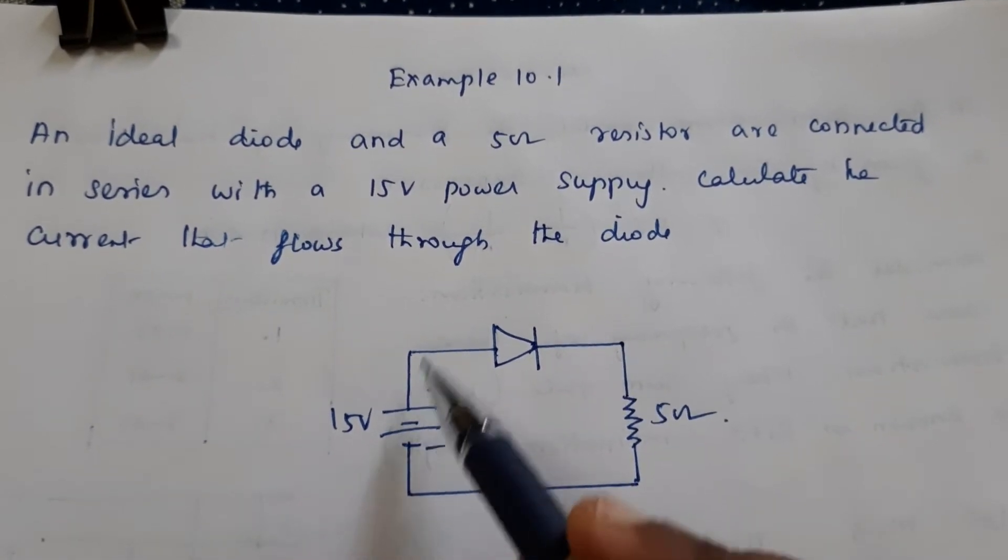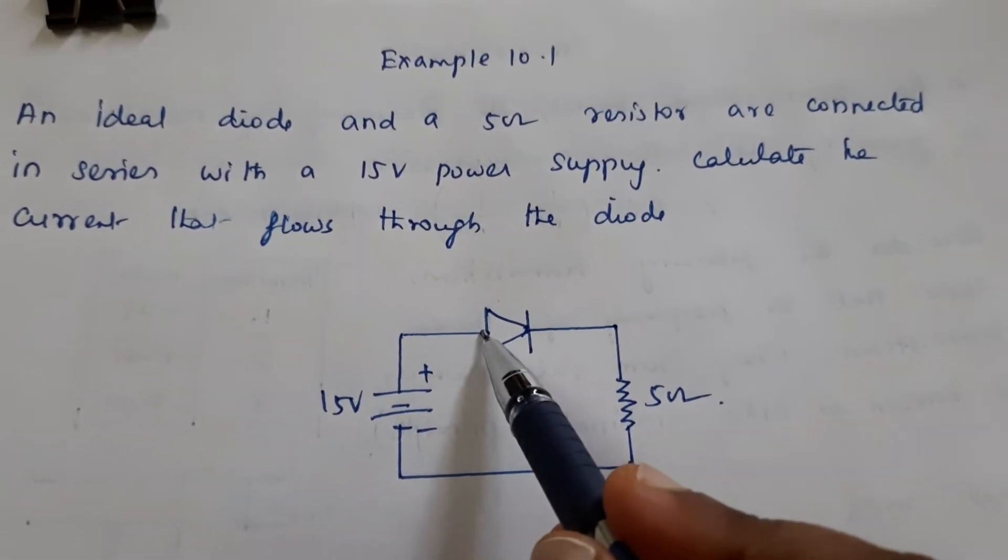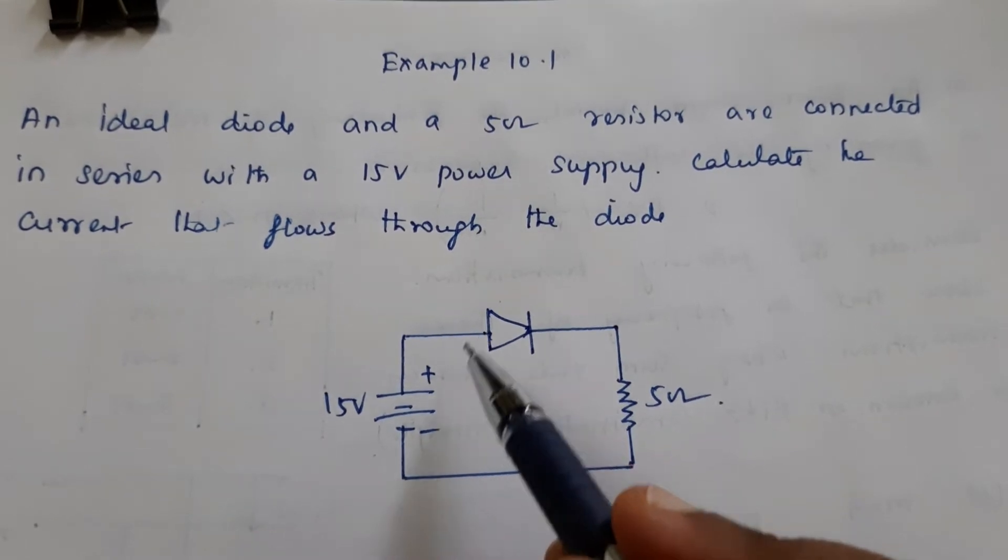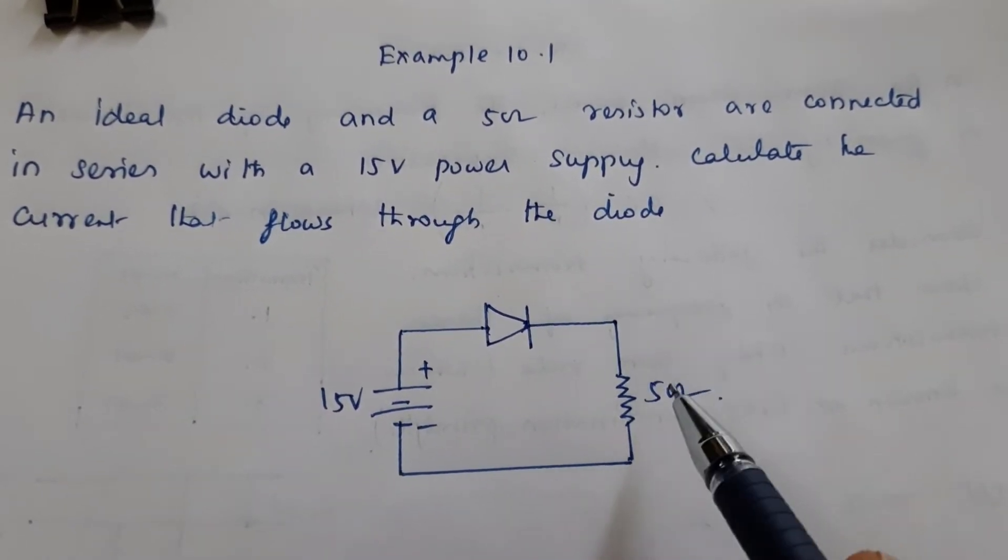Now here positive is connected with positive, so the diode is forward biased. So the current is flowing through the circuit.